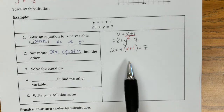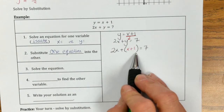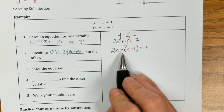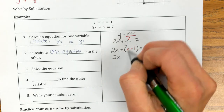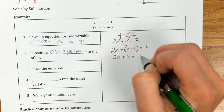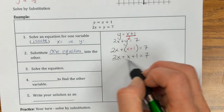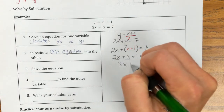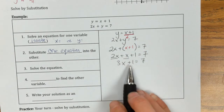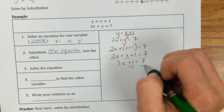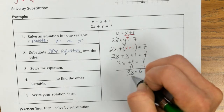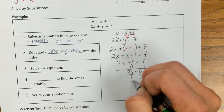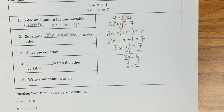Step three: solve this equation. You always want to use parentheses because there could be occasions where you have to distribute, but in this case I don't have to. So I'm going to rewrite this and drop the parentheses, then combine like terms, move terms over, divide, and we get x equals 2.